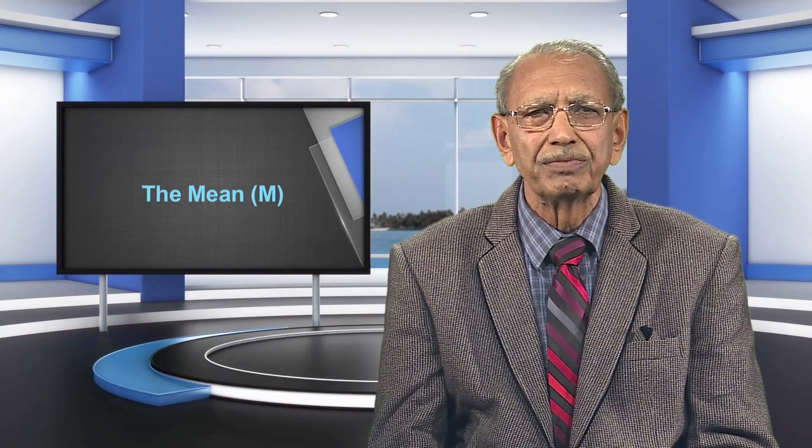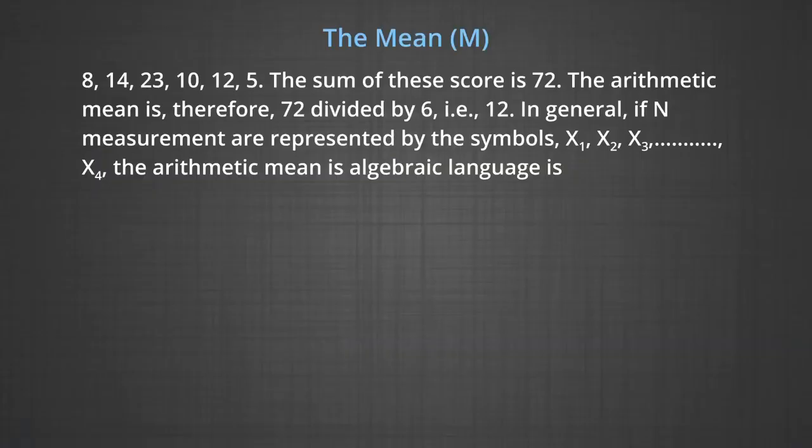Consider the following scores: 8, 14, 23, 10, 12, and 5. The sum of these scores is 72. The arithmetic mean is therefore 72 divided by 6, that is 12.